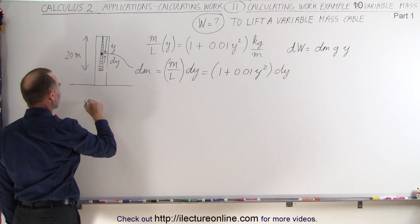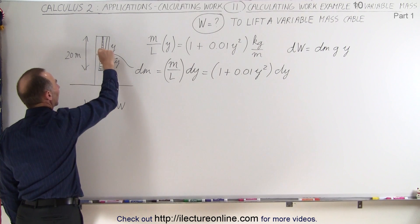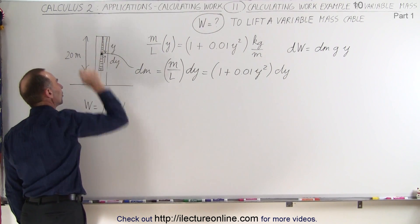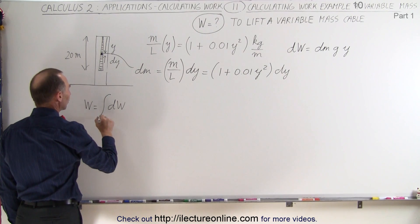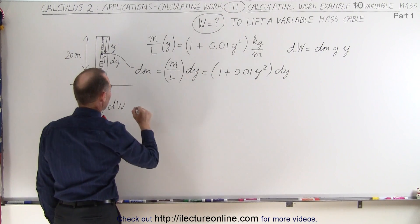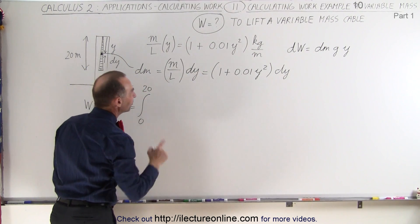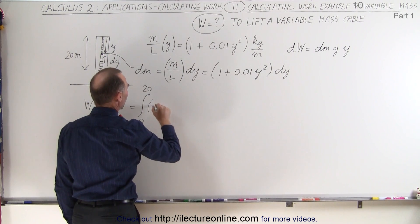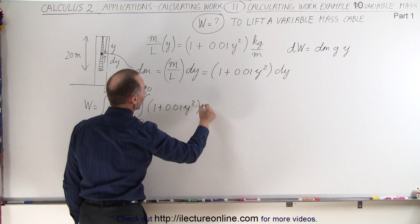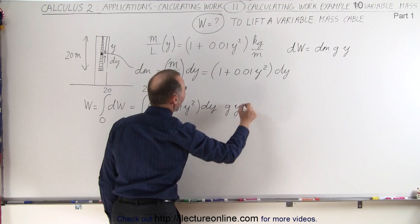So now we can say that the work done will be equal to the integral of all the small little dws. We're going to add up the work done to take each little piece of that cable and lift it to the top. We're going to integrate from y equals 0 to y equals 20. And dw is defined right there. So this is equal to the integral from 0 to 20 of dm. dm is 1 plus 0.01y squared times dy. So this is your dm times g times y.